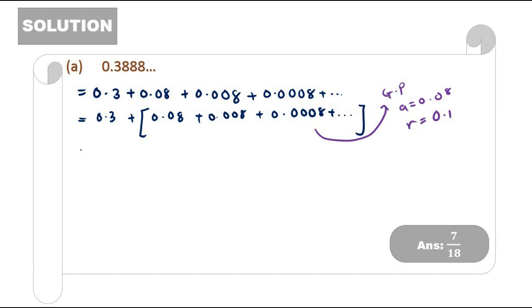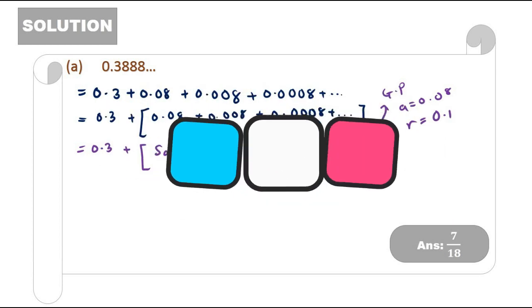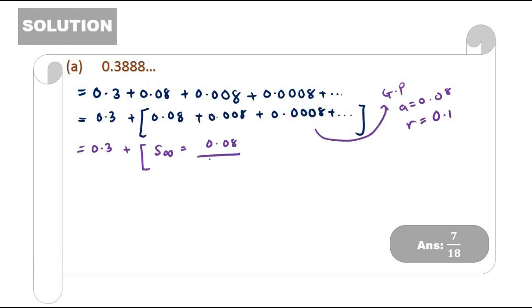Therefore from here we can say that our A is 0.08 and our R is 1 over 10 or 0.1. Therefore, 0.3 remained plus we have to find our S infinity here. So S infinity should be with the formula 0.08 over 1 minus R, so 1 minus 0.1. This one as we know is 3 over 10 plus - use your calculator - should be 4 over 45.